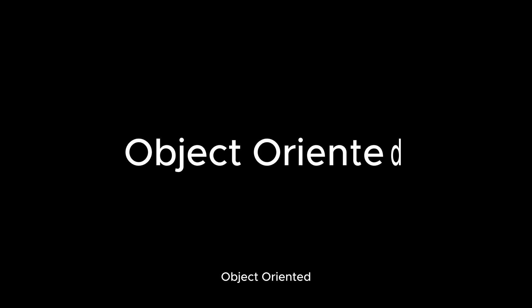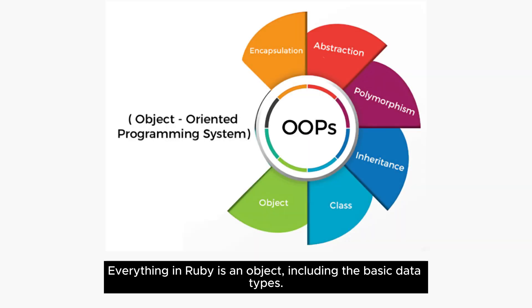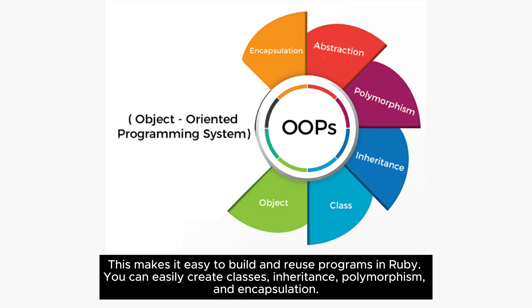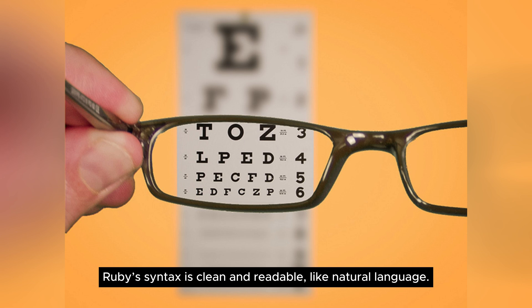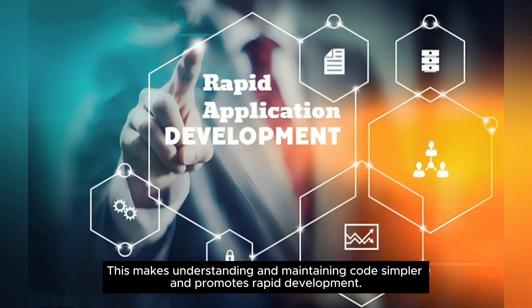Object-oriented: Everything in Ruby is an object, including the basic data types. This makes it easy to build and reuse programs in Ruby. You can easily create classes, inheritance, polymorphism, and encapsulation. Readable and expressive: Ruby's syntax is clean and readable, like natural language. This makes understanding and maintaining code simpler and promotes rapid development.